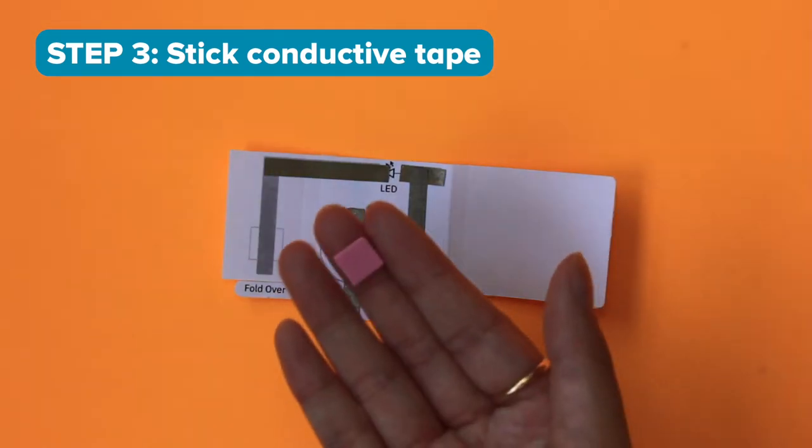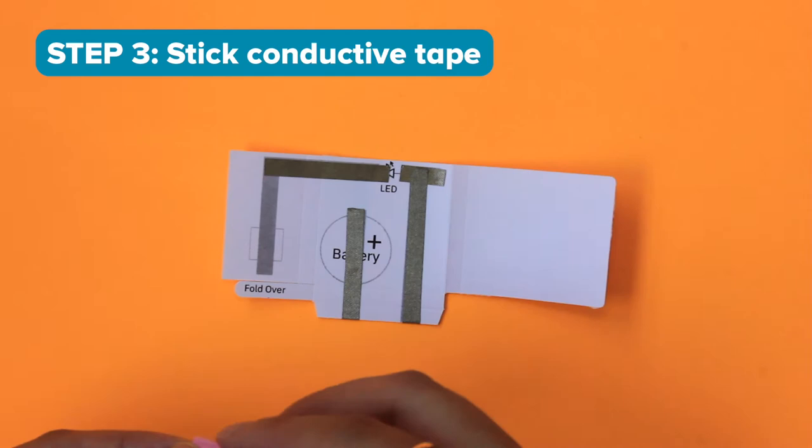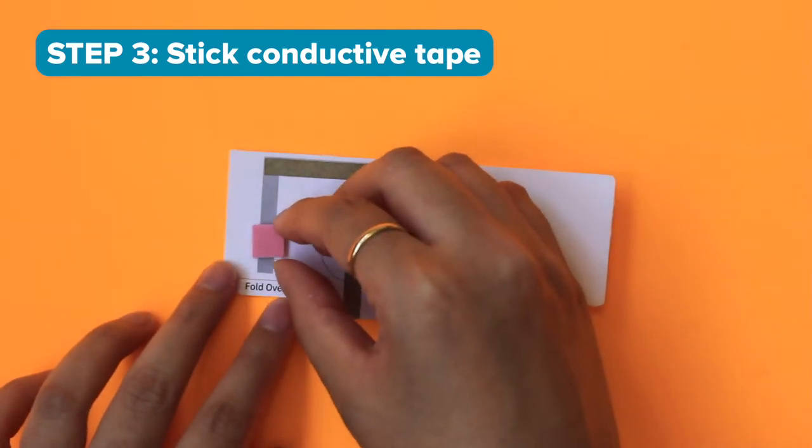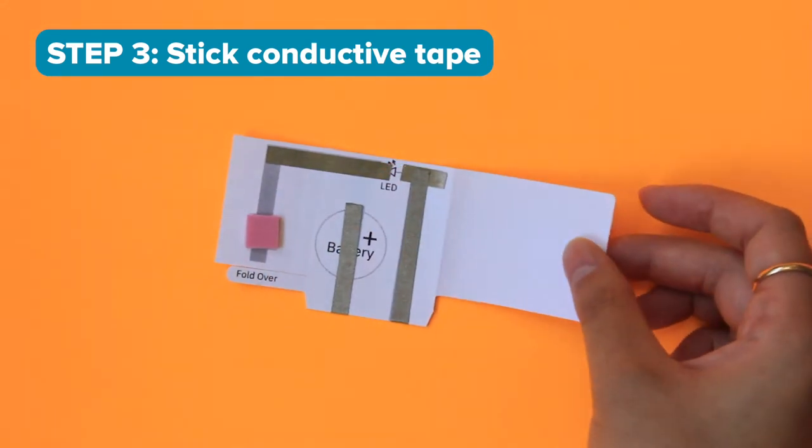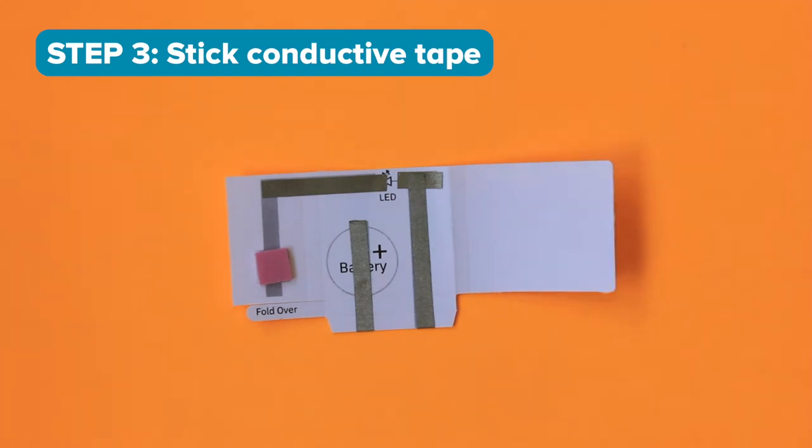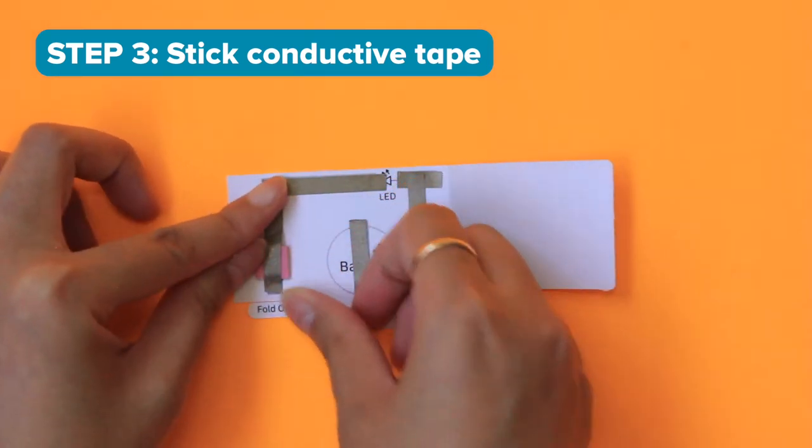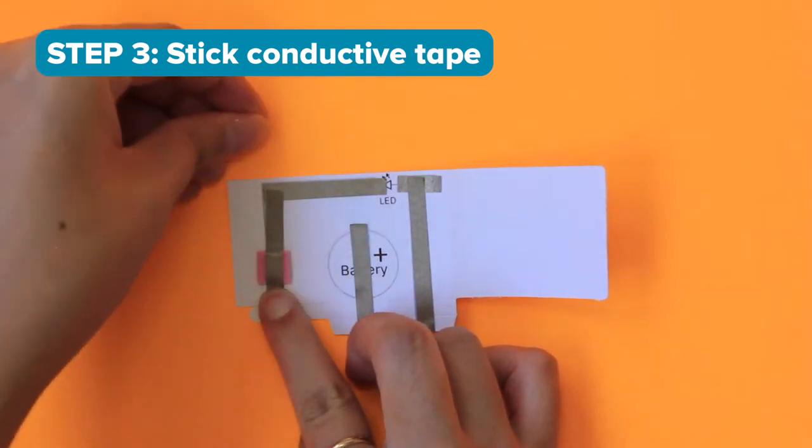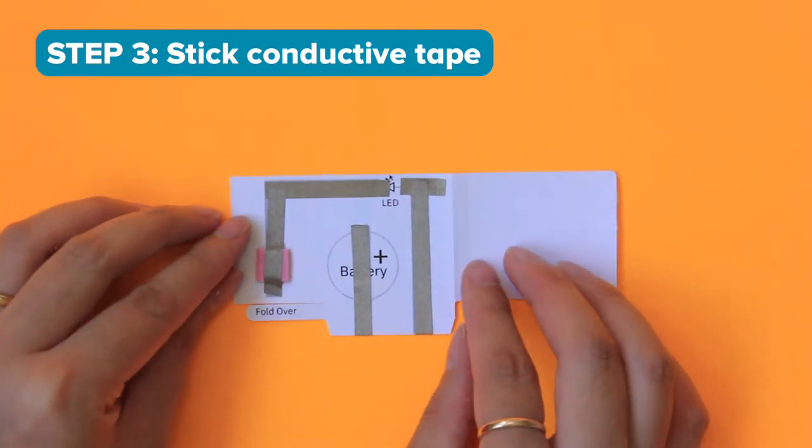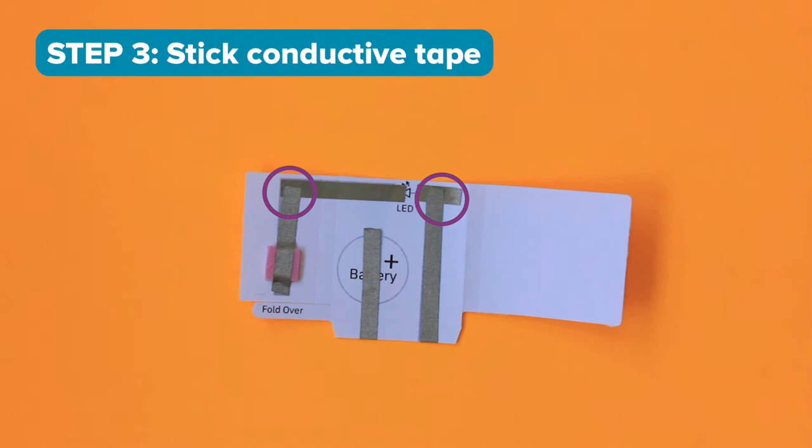Before you tape on the last 3 centimeter circuit line, you'll need the tiny pink square foam. Place it here and tape over it with your conductive tape. This will help the battery touch the conductive tape when your box is folded closed, because the battery is slightly thinner than the box. Make sure to also check that the conductive tape overlaps here and here.